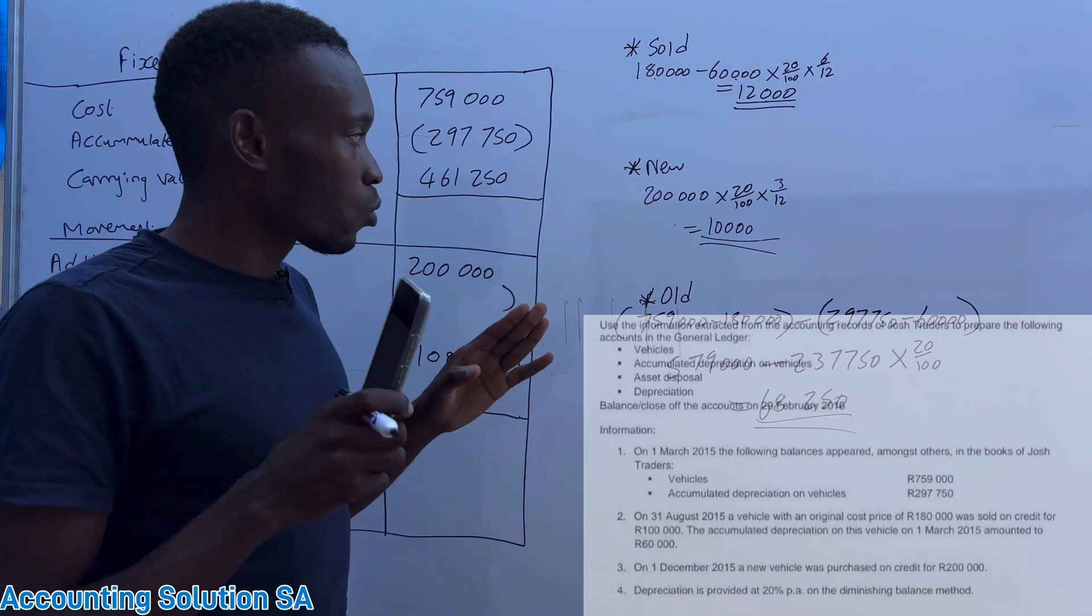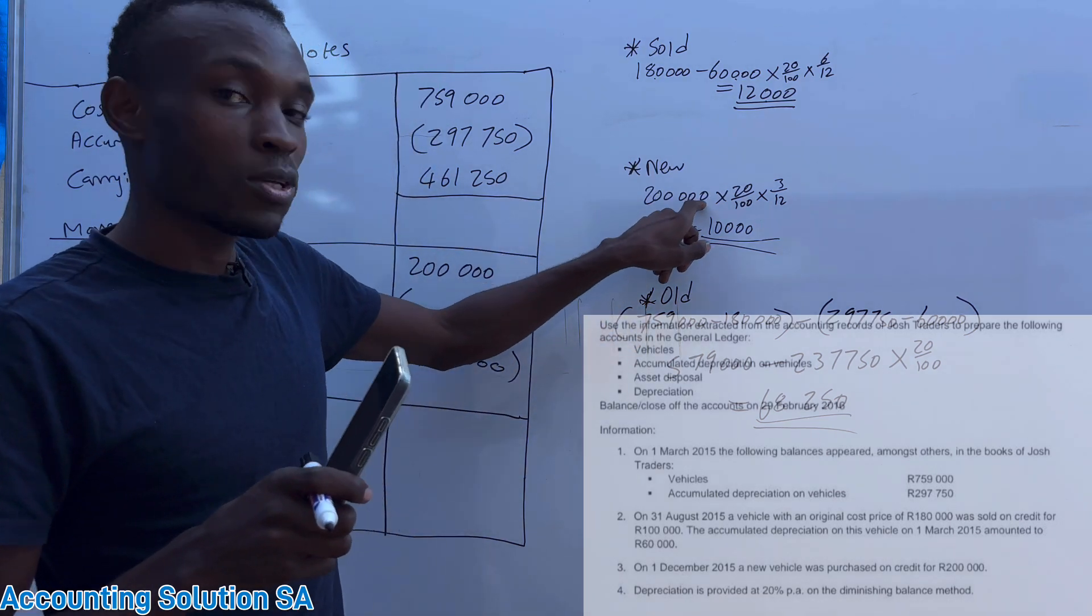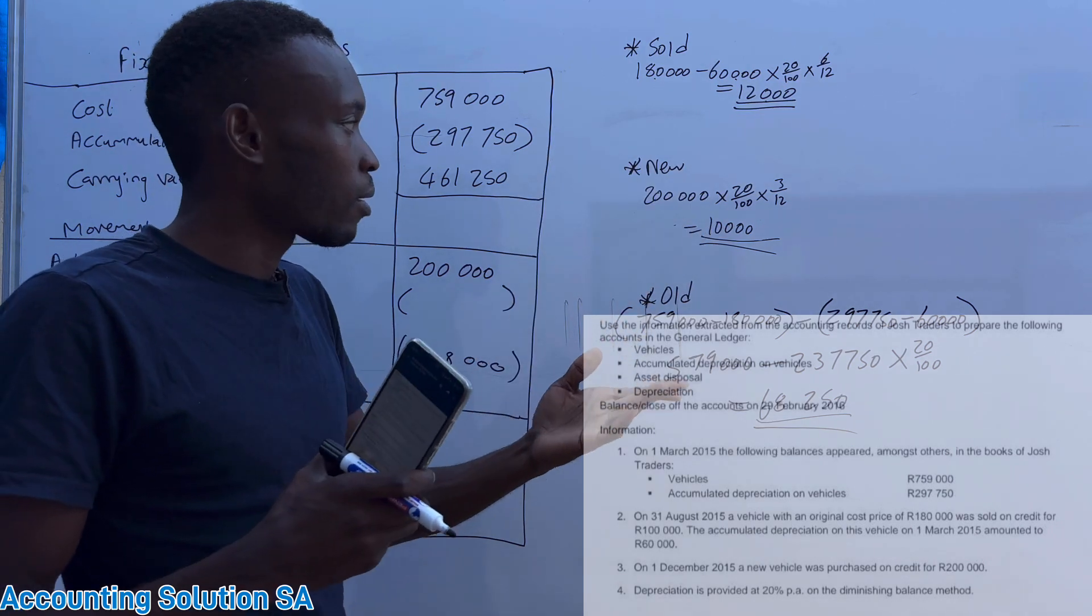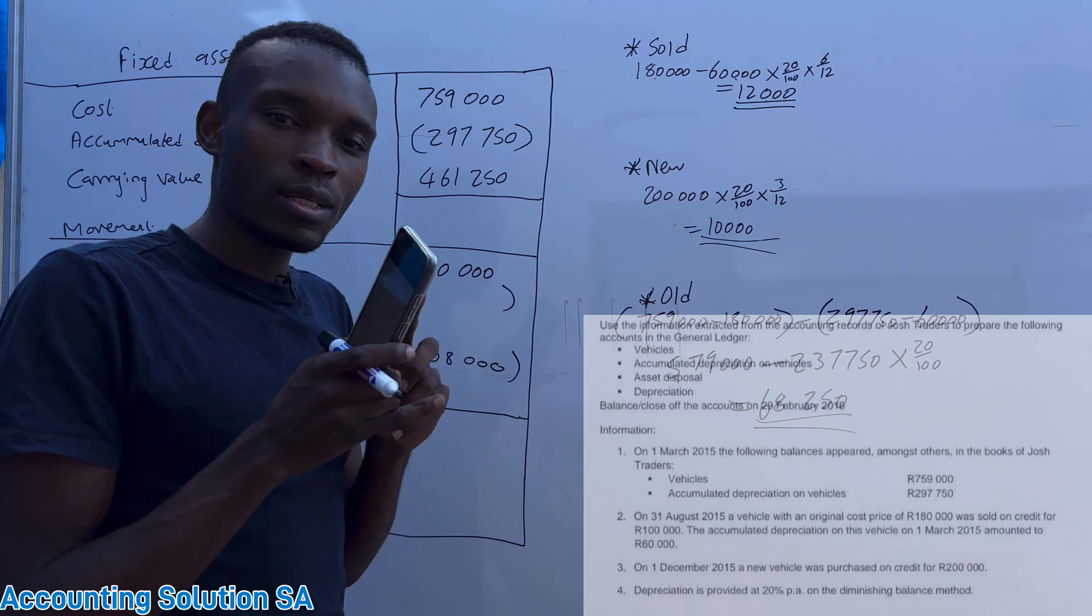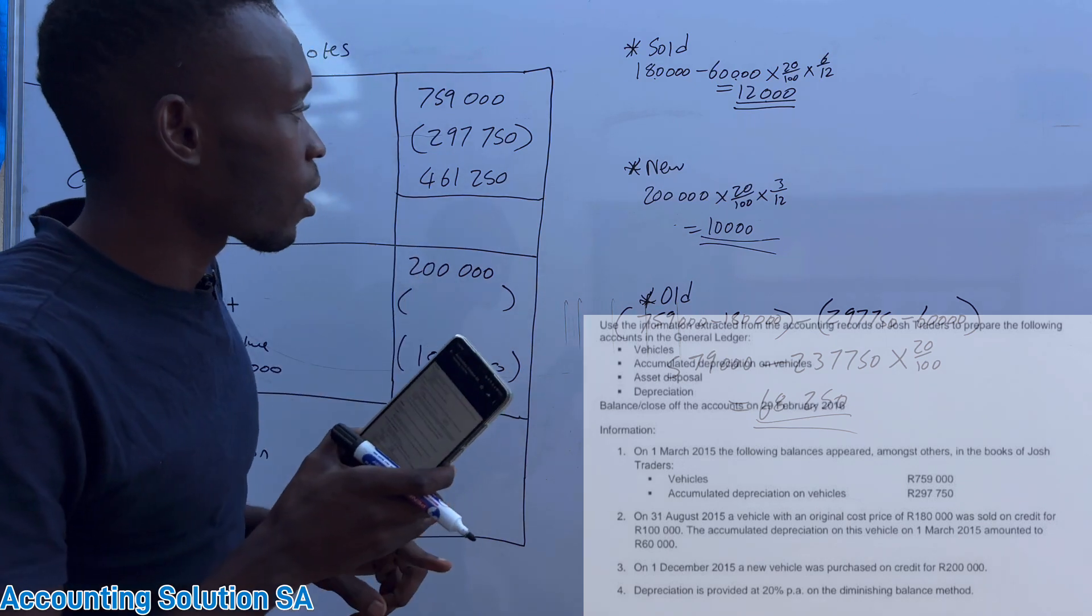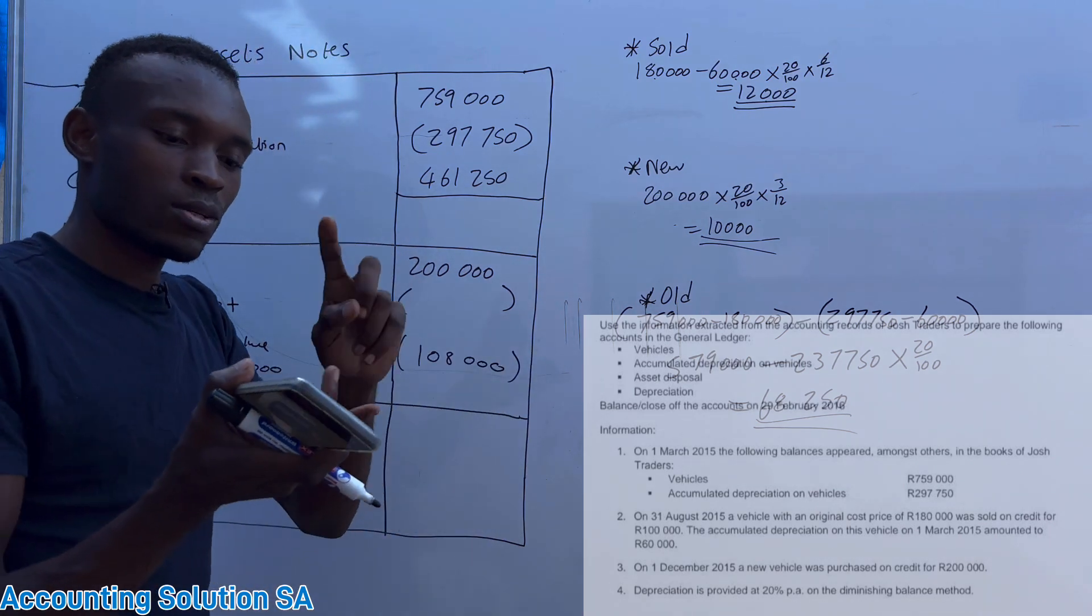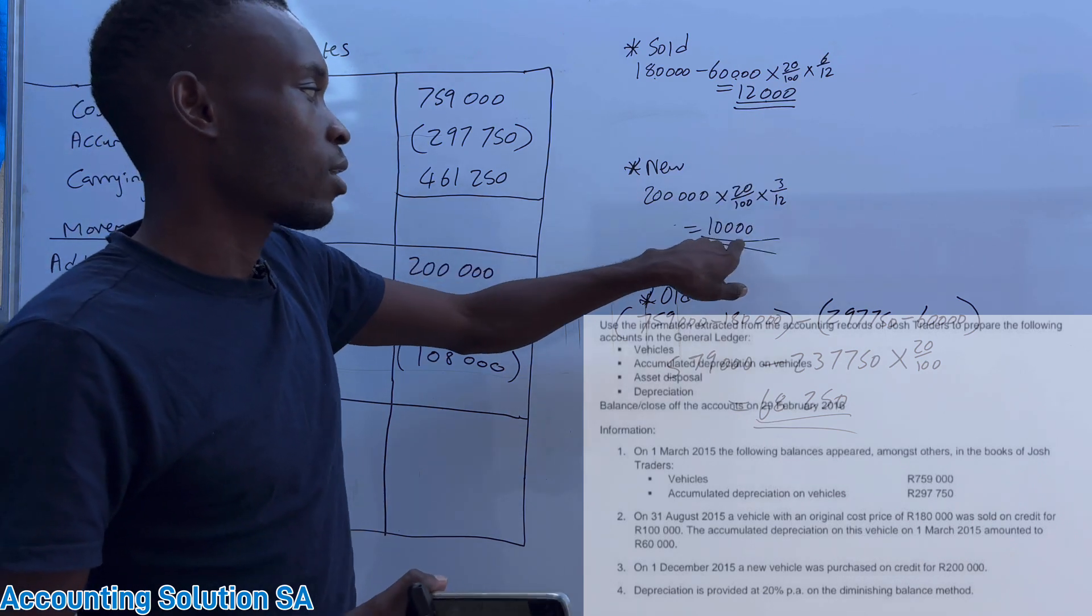Why no minus accumulated? Because there was no accumulated when, because it was still new. So what we need to do is to just the 200,000, because we're going to say minus zero and it's going to give us the same amount. And we count months from December until February, it's gonna give us December, January, February, three months, then we multiply by 3 over 12 and we get 10,000.